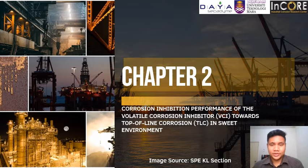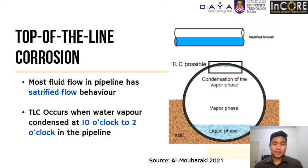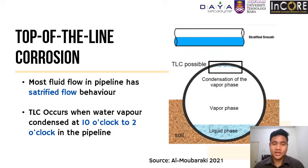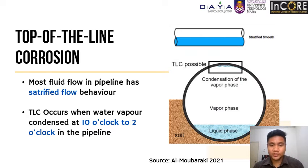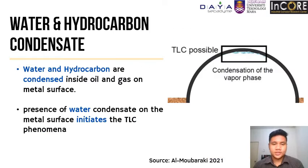For Chapter 2, the literature review. In oil and gas pipelines, fluid flow has stratified flow behaviour as can be seen in the first image, where gas and liquid occupy the upper and lower sections respectively. In the gas section, water vapour and hydrocarbon condense on the 10 o'clock to 2 o'clock region at the top of the pipeline as shown in the second image. In this 10 to 2 o'clock region, water and hydrocarbon condense on the metal surface, and the presence of water initiates the TLC occurrence.